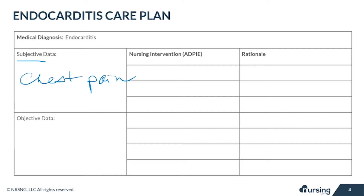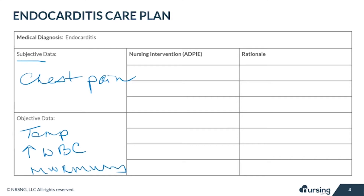Objective data for endocarditis includes possibly a temperature, increased white blood cells, signs of heart failure, heart murmurs, decreased SATs, and also embolic complications including splintering hemorrhage in the nail beds, Janeway lesions on the fingers, toes, and nose, and clubbing of the fingers.